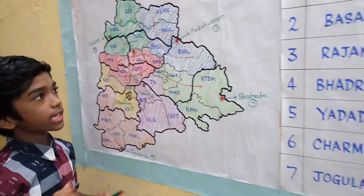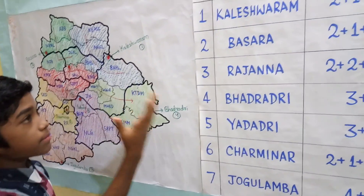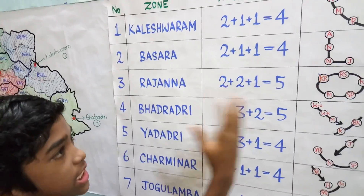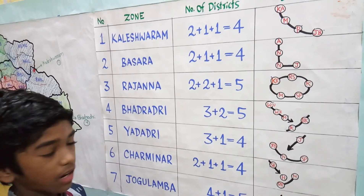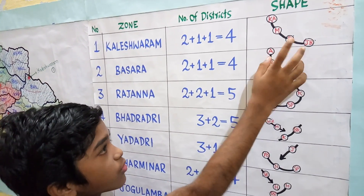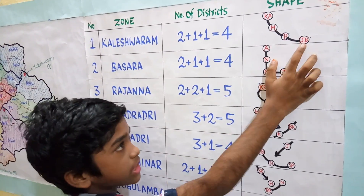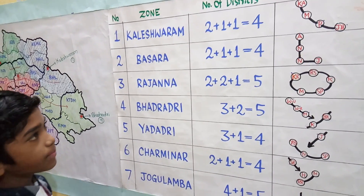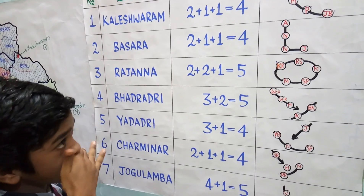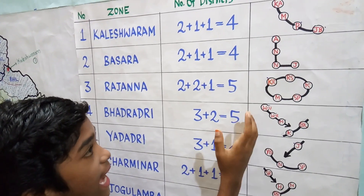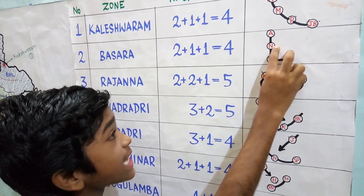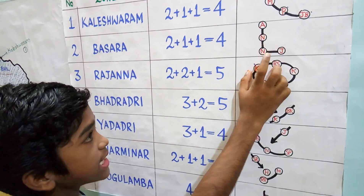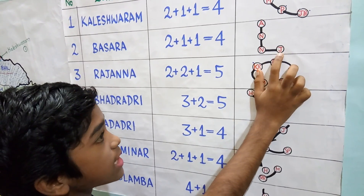Zone number 1, Kaleshwaram, has 4 districts: 2 districts from the old Adilabad district, one is Peddapalli, and one is Jaishankar Bhupalpalli. Zone number 2, Basara, also has 4 districts: 2 districts from the old Adilabad district, one is Nizamabad, and one is Jagityal.